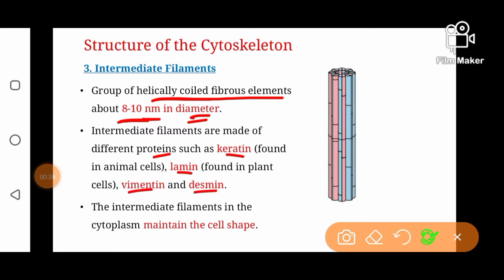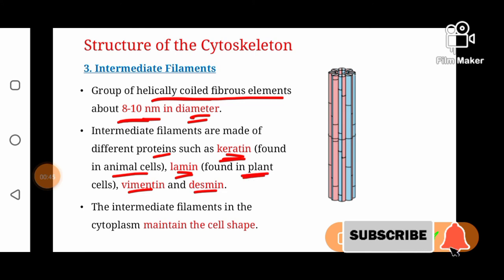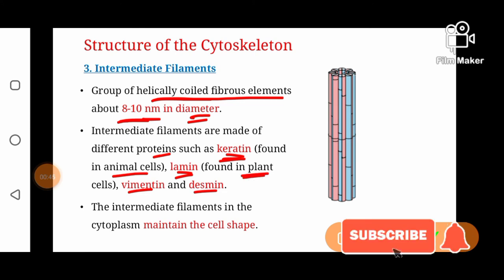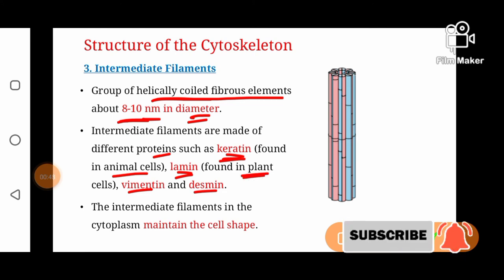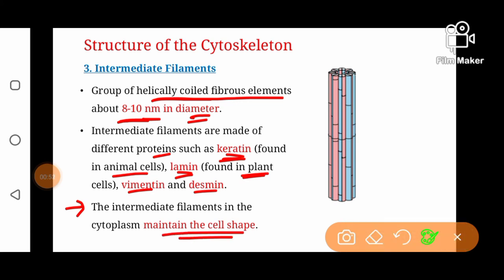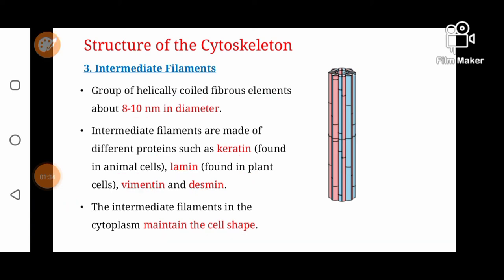Keratin protein is found exclusively in animal cells such as skin, while lamin protein is found exclusively in plant cells. Intermediate filaments in the cytoplasm help maintain the cell shape.